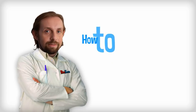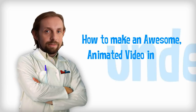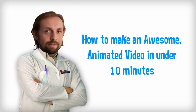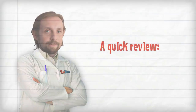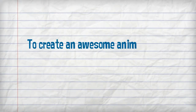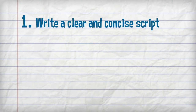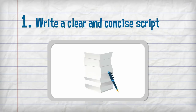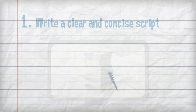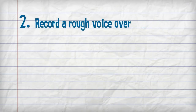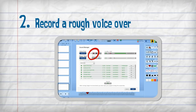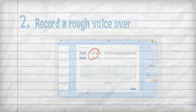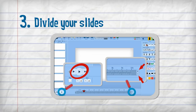There you have it — how to make an awesome animated video in under 10 minutes. You've now got all the essential concepts and tools at your fingertips. Let's do a quick review. To create an awesome animated video, all you need to do is write a clear and concise script that speaks directly to your audience. Record a rough voiceover to set up initial slide lengths and animation timing. Divide your slides so they run alongside the proper audio sections.